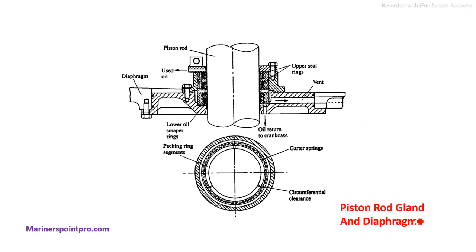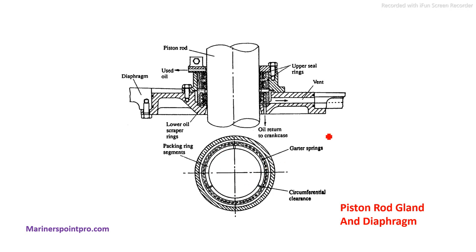Now this is the piston rod gland and diaphragm. This is the diaphragm, this is the piston rod, there is a sealing arrangement, and this is the cross-sectional diagram of the piston rod area. You can see the garter springs, packing ring segments — these are the parts which can be asked, so just go through this diagram.